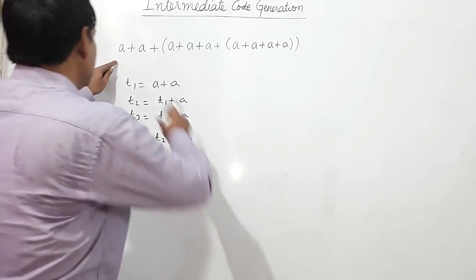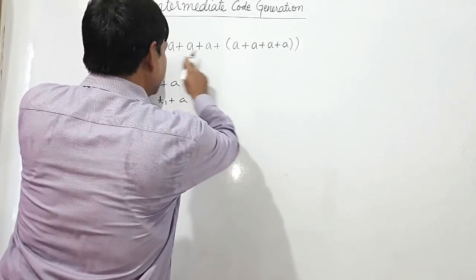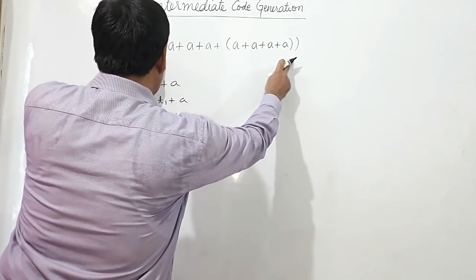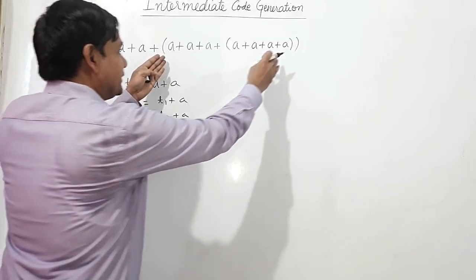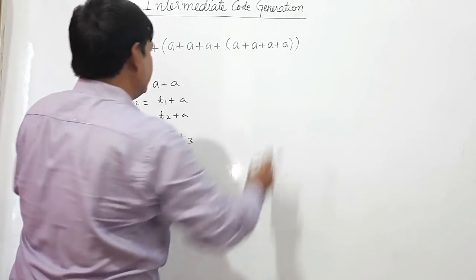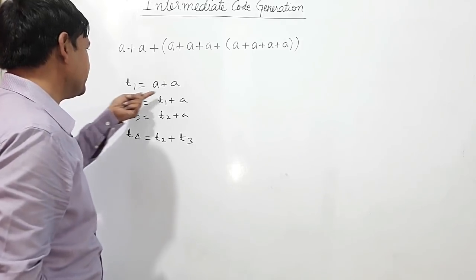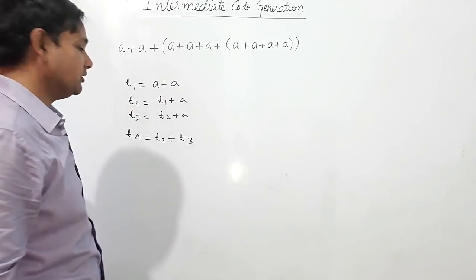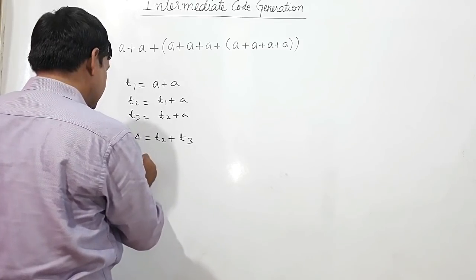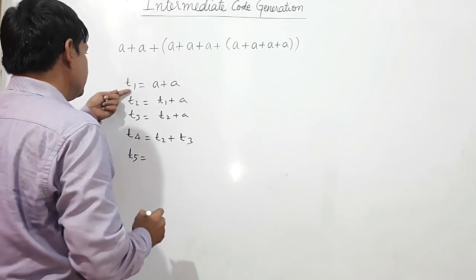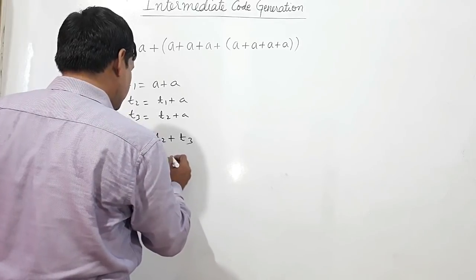Now I have to add — this has been evaluated — the result of this is with t4: a plus a plus t4, and this was with bracket. So a plus a has to be evaluated, and a plus a is with t1. So having added, I will take this result t5, which will be t1 plus t4.